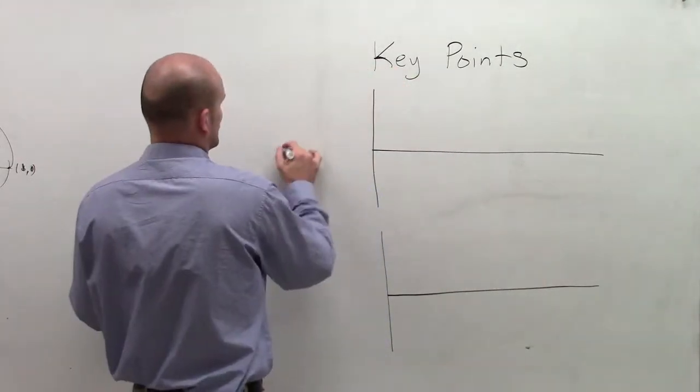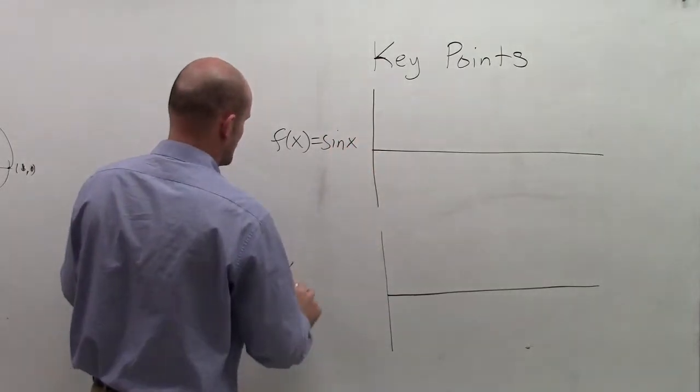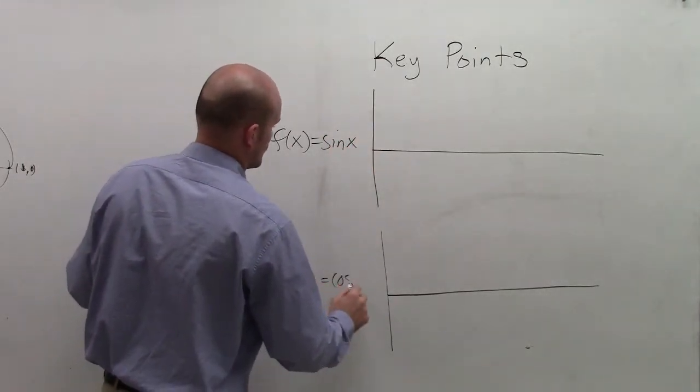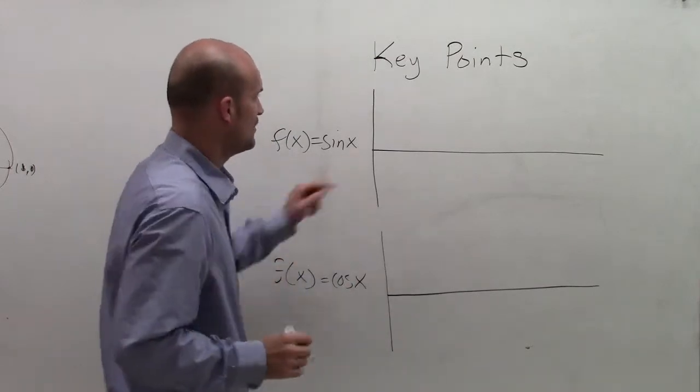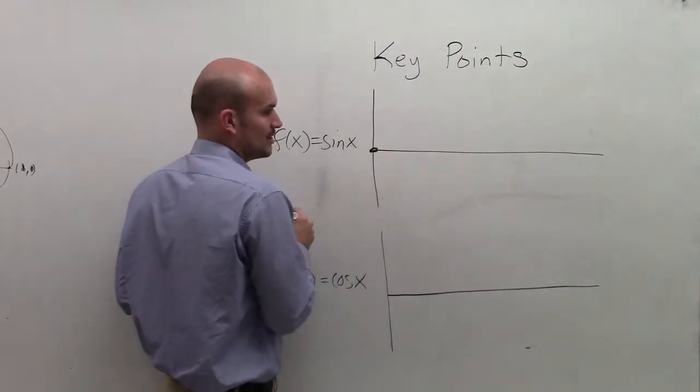So let's graph on this one f(x) equals sine of x, and on this one, let's graph f(x) equals cosine of x. So remember, at sine of x, the angle at 0 is equal to 0.